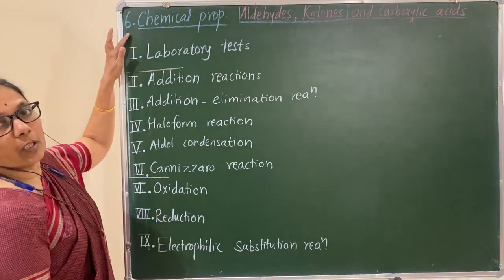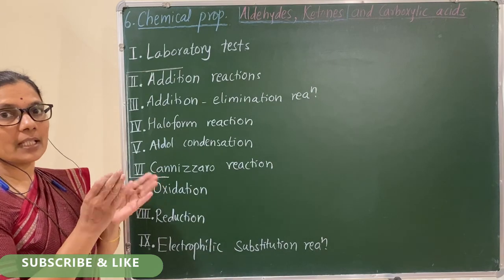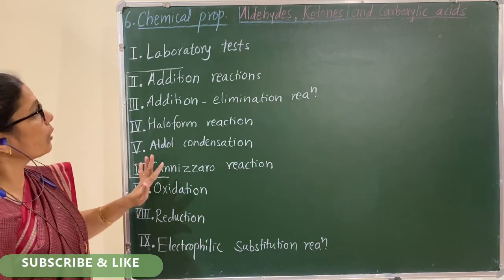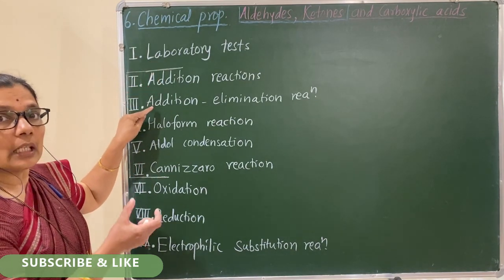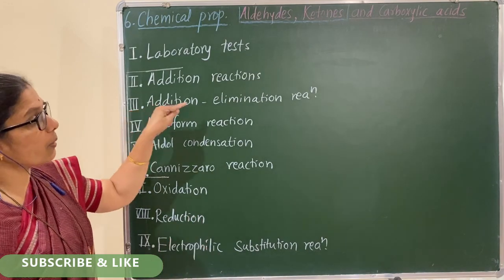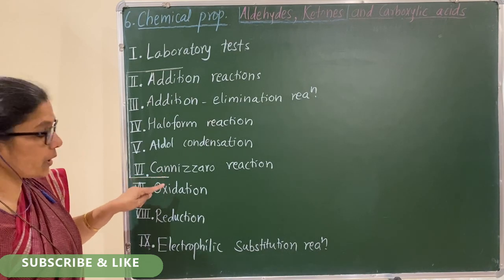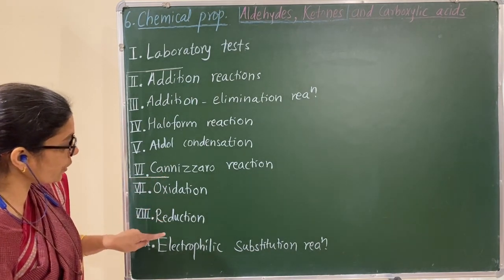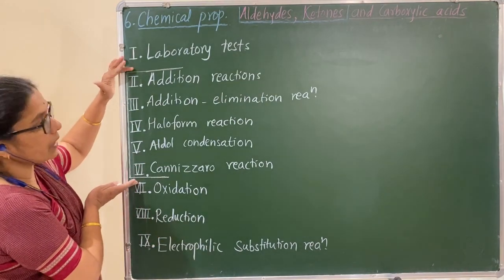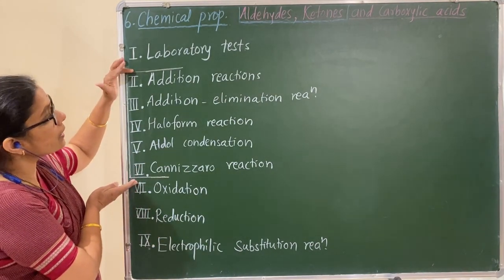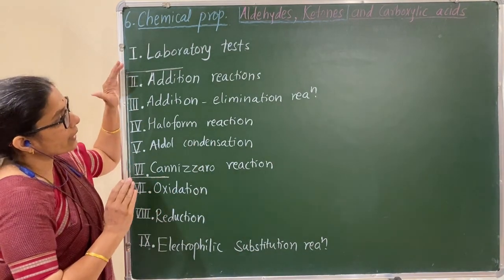Now let us consider chemical properties. These have been grouped for easy study. First: laboratory tests. Then: addition reactions, nucleophilic addition, condensation reactions with ammonia and their derivatives, haloform reaction, aldol condensation, Cannizzaro reaction, oxidation-reduction, and electrophilic substitution reaction. These reactions are essentially reactions of aldehydes and ketones with nucleophiles. Let us see them one by one.